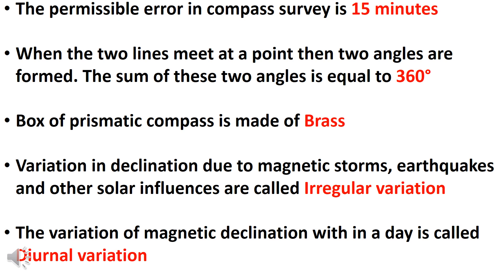The variation in declination due to magnetic storms, earthquakes, and other solar influences are called irregular variations. The variation of magnetic declination within a day is called diurnal variation.